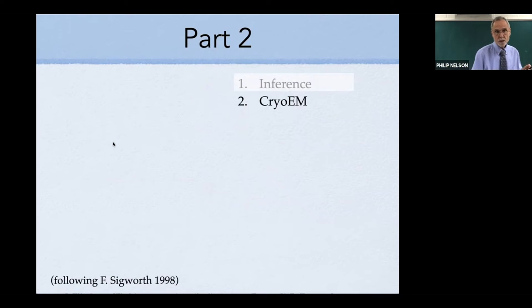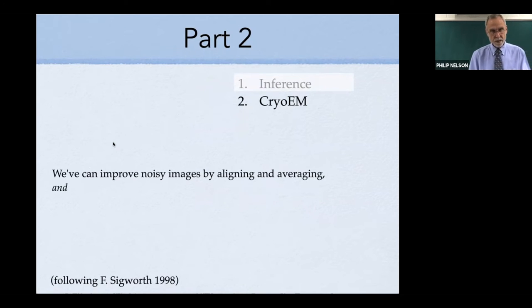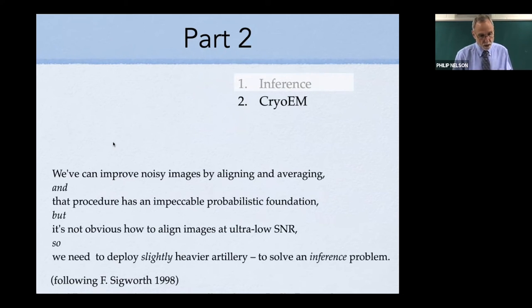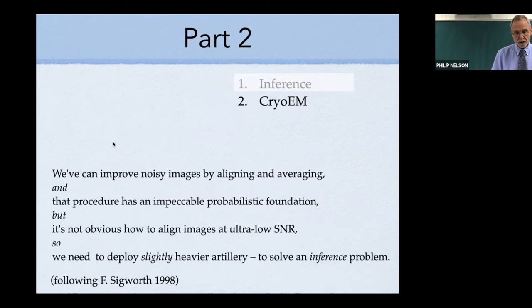It takes that 50% down to 5%. In this problem, getting a positive test result means you only have a 5% chance of being sick—not any of those other random things that those people just guessed. That's worth knowing for this application, but it's worth knowing for a lot of applications. It's one of those unexpectedly general things I was alluding to at the beginning. Let's get on to the main event. Since this is only a half hour talk: we can improve noisy images by aligning them and averaging them. I'll tell you about that in a minute. That procedure rests on impeccable probabilistic foundations, but how do you align images at ultra-low signal-to-noise ratio? That's the problem we need to develop some slightly heavier artillery.